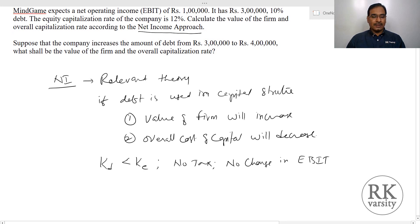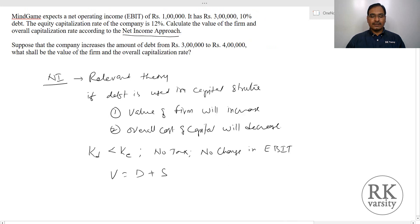The value of the firm equals D plus S, where D is the market value of debt and S is the market value of equity. Here the market value of debt is not given, so we consider debt at book value, that is 3 lakhs. We then need to calculate S, the market value of equity.